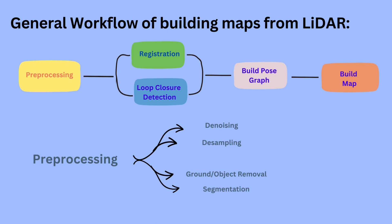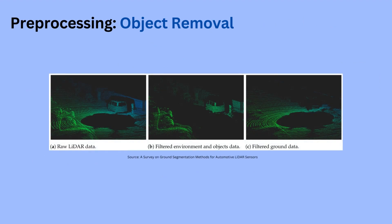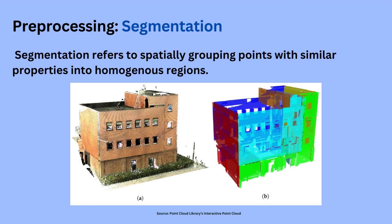Like every data-related project, the first step is to properly pre-process that data. When creating a map using LiDAR data, pre-processing can look like denoising, downsampling, object removal such as ground object removal, and segmentation. In this step we are removing features that might be irrelevant to the task we are performing. For example, if we're going to map a room, then ground data may be irrelevant. Segmentation refers to spatially grouping points with similar properties into homogeneous regions.